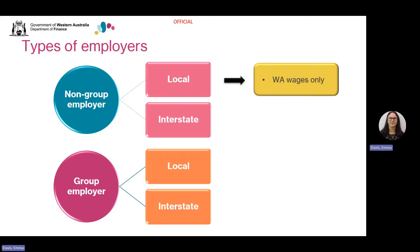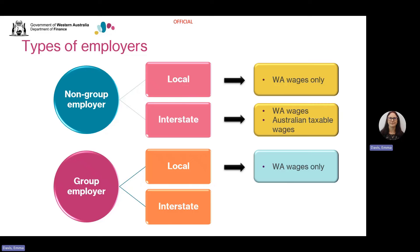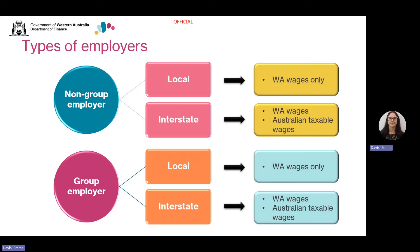A local group employer is grouped with at least one other wage paying entity and all members of the group pay wages only in Western Australia. An interstate non-group employer pays wages both in WA and at least one other Australian jurisdiction and the employer is not a member of a group. An interstate group employer is grouped with at least one other wage paying entity and pays wages in Western Australia, with at least one member of the group paying wages in another state or territory. Every employer listening today will fall into one of these categories.